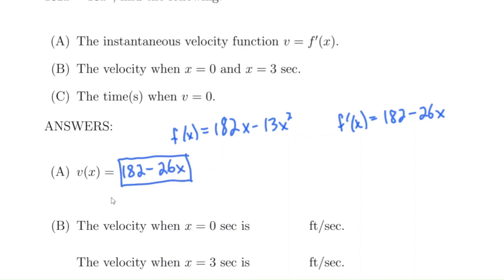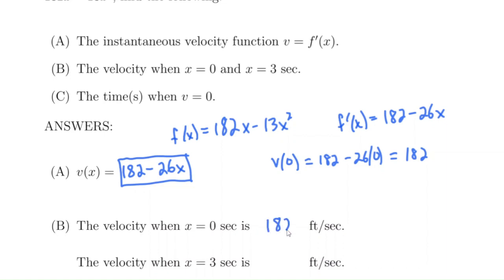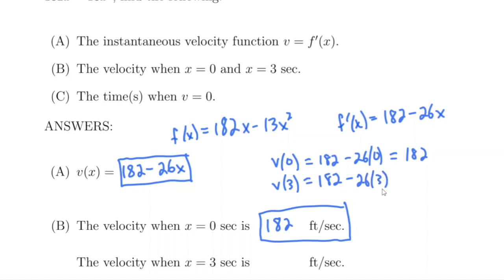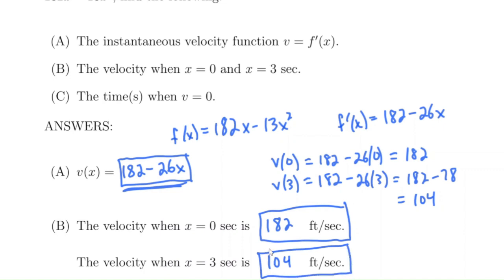Now, the velocity when x equals 0 seconds: we find v of 0, which is 182 minus 26 times 0, and that's just 182. So the velocity at time x equals 0 seconds is 182 feet per second — the object is already moving at 182 feet per second when x is 0. When x is 3, we find v of 3: 182 minus 26 times 3, which is 182 minus 78, which is 104. So the velocity at x equals 3 is 104 feet per second.